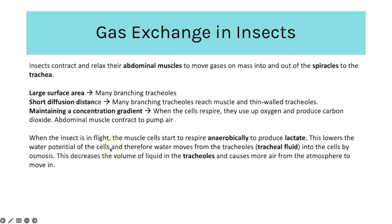When insects are in flight there is an added effect: muscles contract and relax more rapidly, causing anaerobic respiration and production of lactate. That lactate dissolves to form lactic acid, lowering the water potential of the cell. This causes water — the residual tracheal fluid — to move into the abdominal cells by osmosis, decreasing the volume of liquid inside the tracheoles and causing a decrease in pressure, so air from outside moves in through the spiracles.